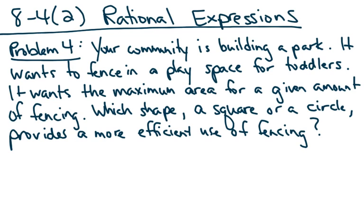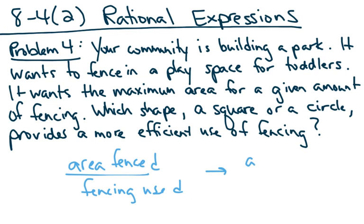To find a measure of efficiency, one way of doing it is to compare the area fenced with the fencing used. In other words, we want to know area over perimeter.